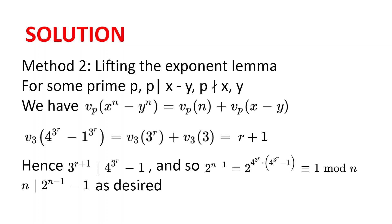So we have shown that 3 to the power of r plus 1 divides 4 to the power of 3 to the power of r minus 1 by two methods. Therefore 2 to the power of n minus 1, which equals 2 to the power of 4 to the power of 3 to the power of r times 4 to the power of 3 to the power of r minus 1, is congruent to 1 modulo n, and so n divides 2 to the power of n minus 1, minus 1, which is what we needed to show.